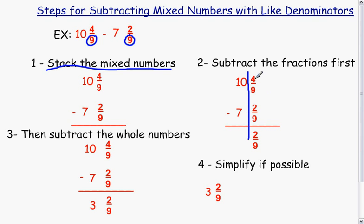So first, I would do the fractions first. 4 ninths minus 2 ninths. When the denominator is the same, the denominator stays the same in your answer. 4 minus 2 gives me 2. Then I have 2 ninths. Then I'm going to move over to my whole numbers and subtract them as well. 10 minus 7 gives me 3.